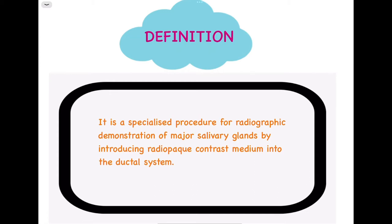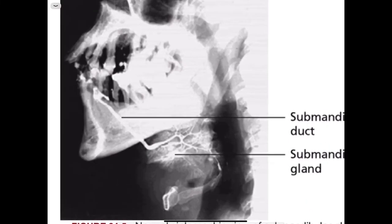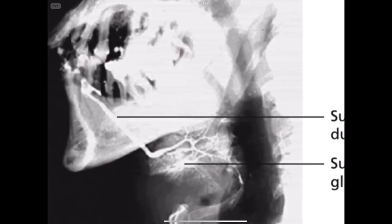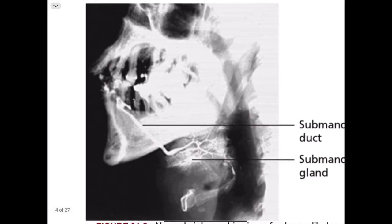Here is a slide demonstrating the sialographic view of the submandibular gland. The radiopaque contrast medium has flowed into the ductal system of the submandibular gland, and as a result we can clearly visualize the ductal system along with its branches. As we know, the ductal system branches like a tree at regular intervals, and this appearance is very prominent here.